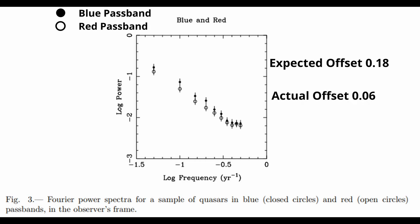In fact, the data for the blue light curve appears to be systematically offset from the red one by 0.06 in the log.